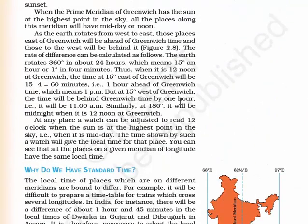Now try to understand this small calculation. It takes 24 hours for Earth to make one rotation, so 360 divided by 24 equals 15 degrees — meaning in one hour, Earth moves 15 degrees. Therefore in one minute, 15 divided by 60 equals 0.25 degrees, so Earth moves 4 minutes per degree. Remember this.